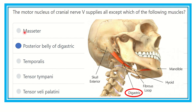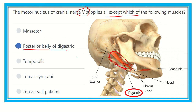So here we can confirm: masseter, temporalis, tensor tympani, and tensor veli palatini are all supplied by cranial nerve 5, the trigeminal nerve. But the posterior belly of the digastric — visible here — is not supplied by the trigeminal nerve; it is supplied by the facial nerve. Therefore, our answer is the posterior belly of the digastric, which is not supplied by the trigeminal nerve.